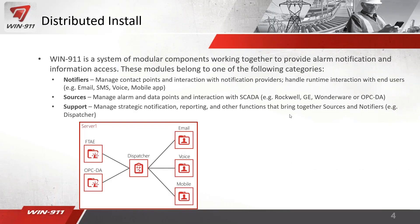WinDM1 is a system of modular components working together to provide alarm notification and information access. These modules fall into categories: Notifiers manage contact points and interaction with notification providers — your email, SMS, voice, and mobile app notifiers. Sources manage alarm and data points and interact with the SCADA system — Rockwell FactoryTalk, GE iFIX, Wonderware, OPC, etc. Support modules manage strategic notifications, reporting, and other functions — that's the Dispatcher, where you define rules, strategies, tactics, and who gets called.